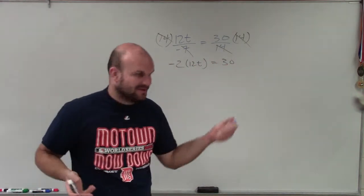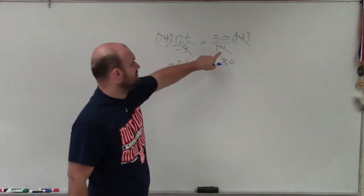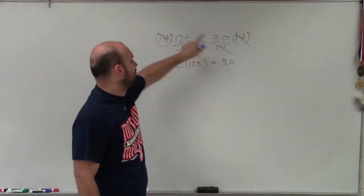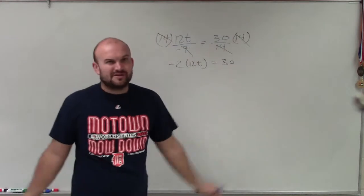A lot of you might say, well yeah, if you do the cross product, you've got to multiply 14 times 12 and negative 7 times 30. Why do you want to do all that?